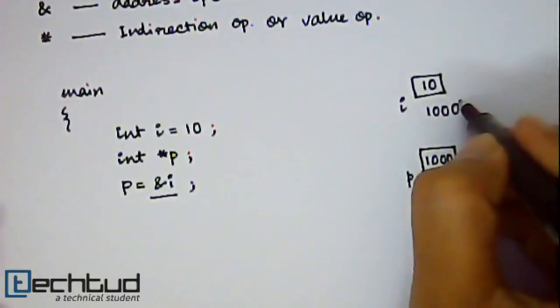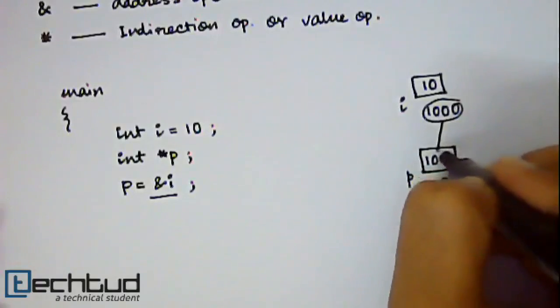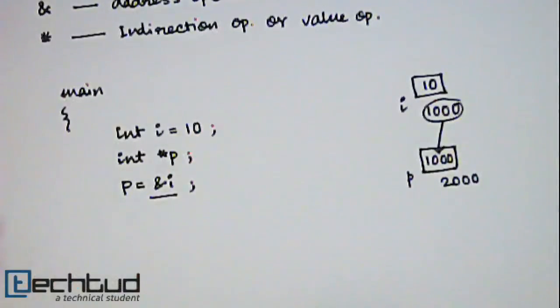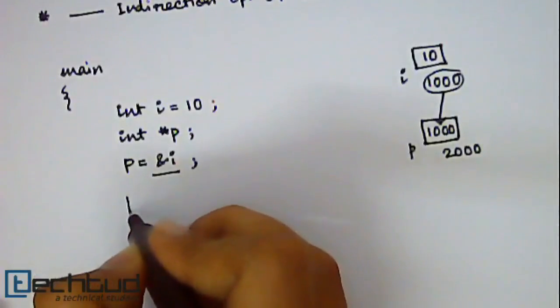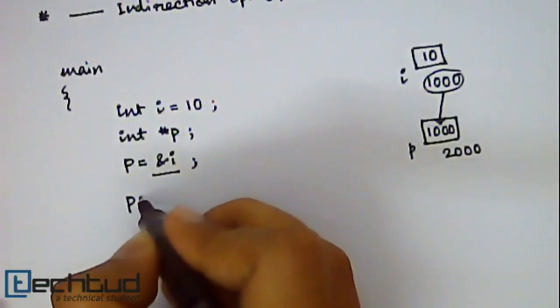So this 1000 is being stored inside p by this assignment statement. Alright? So now you want to print the values assigned inside i and p.